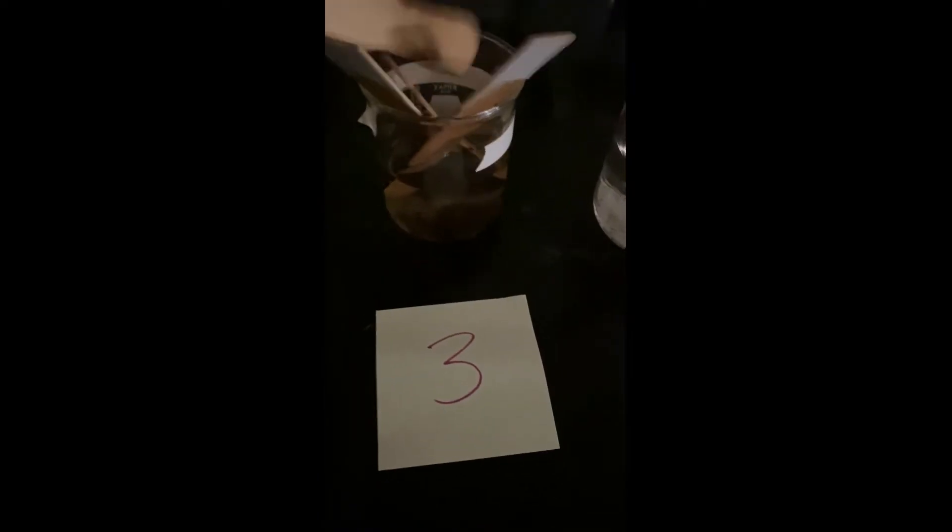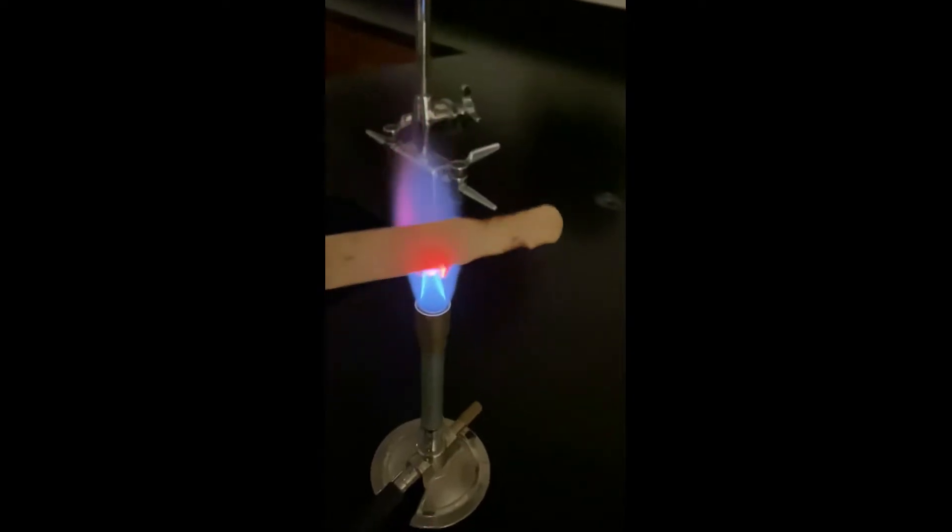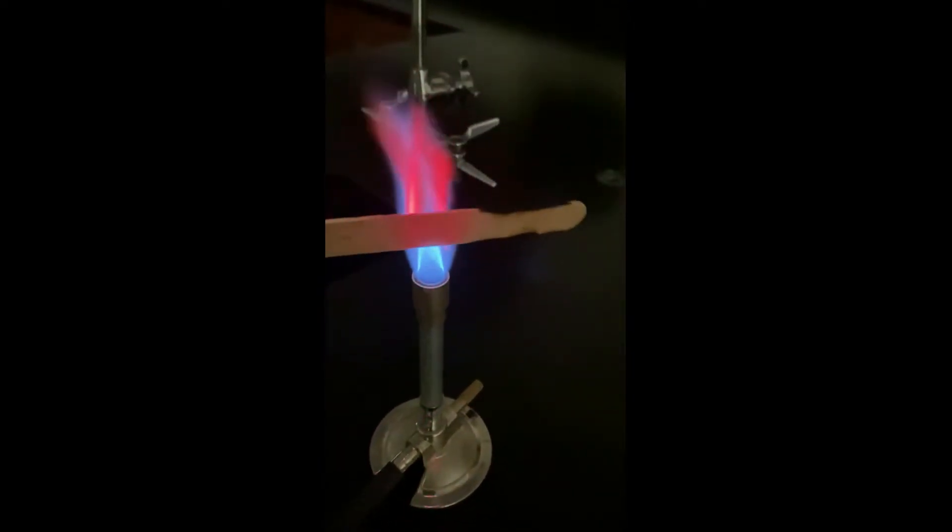You want to make sure that you adjust the gas until you see that blue color. If you are working with a yellow flame, go ahead and adjust your gas flow until you can get that blue. It's going to work much better.